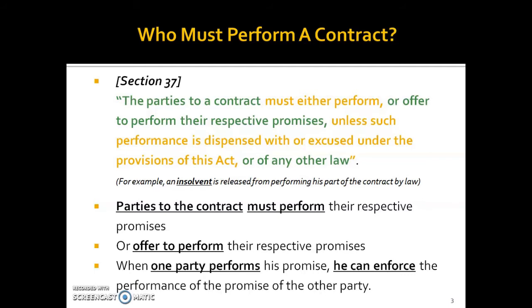Who must perform the contract? The parties to the contracts must perform their respective promises or offer to perform them. When one party performs his promise, he can enforce the performance of the promise of the other party. For example, if I pay 10,000 rupees in advance, I can enforce that the other party delivers their part. Similarly, if they deliver the goods, they can demand payment from me — that is what Section 37 says.